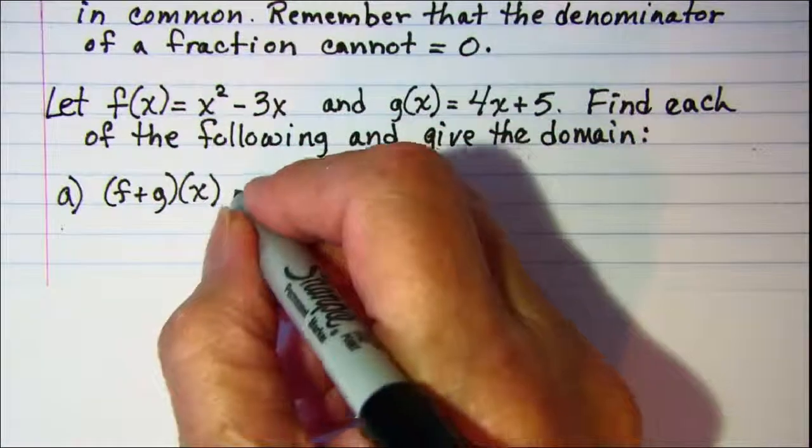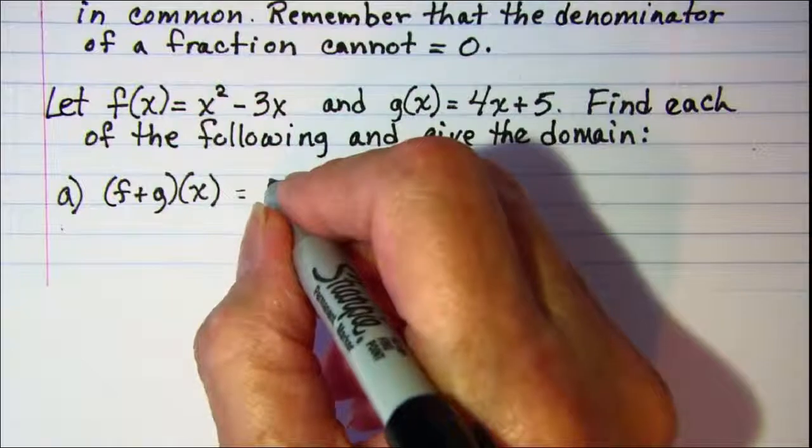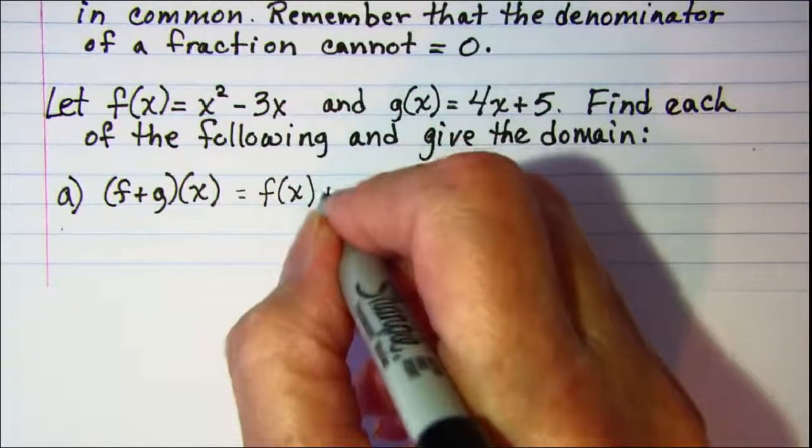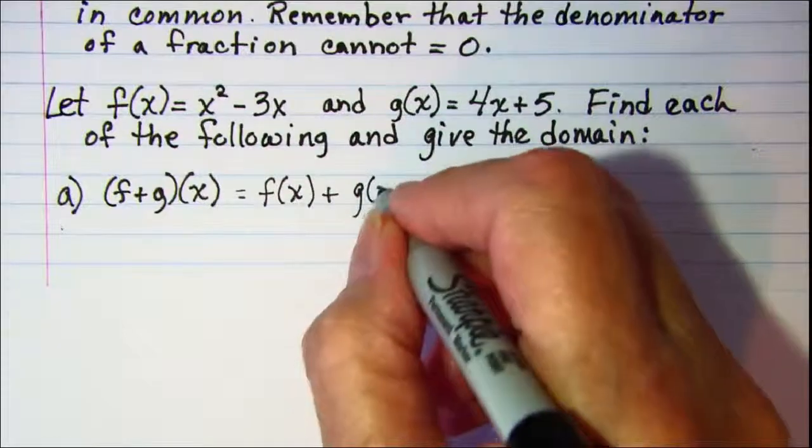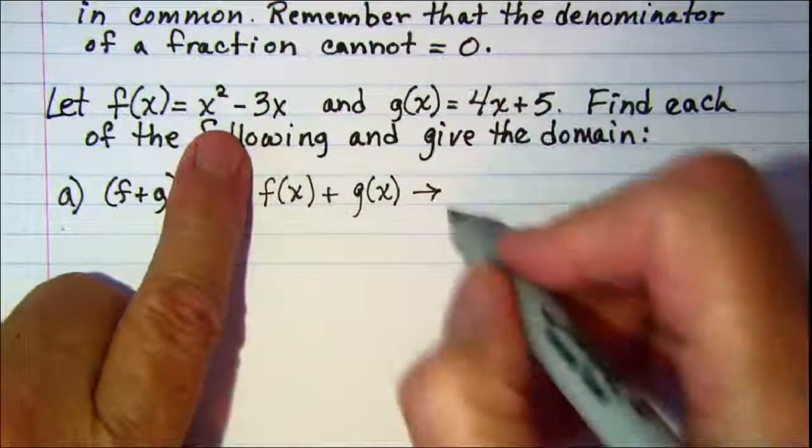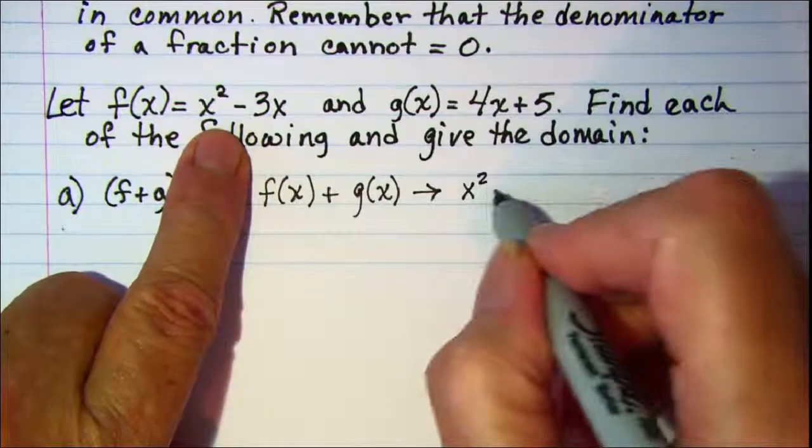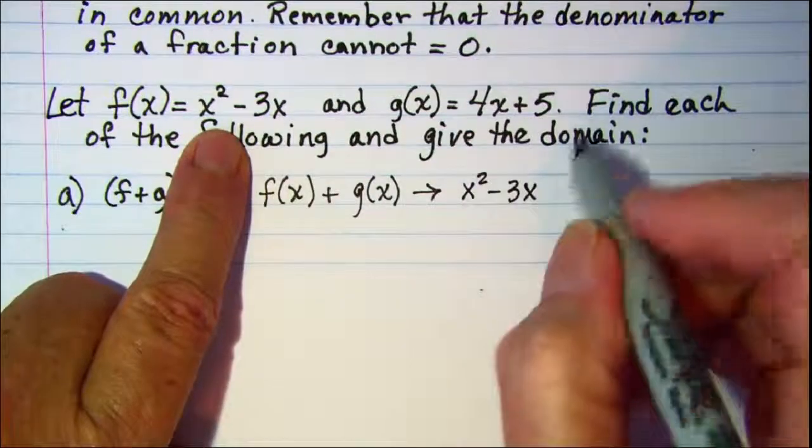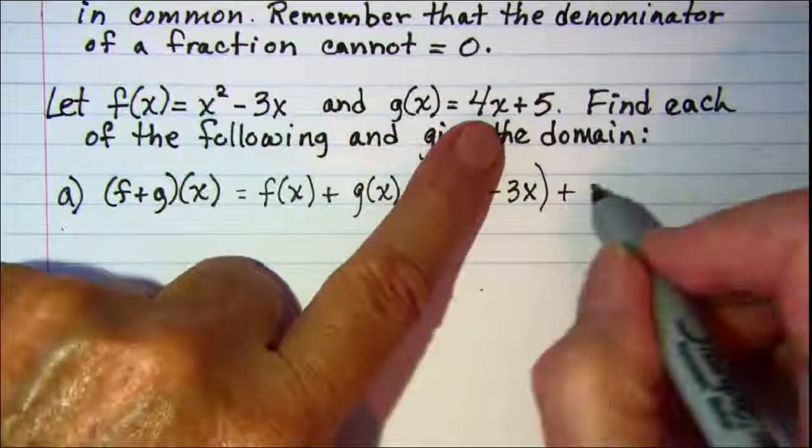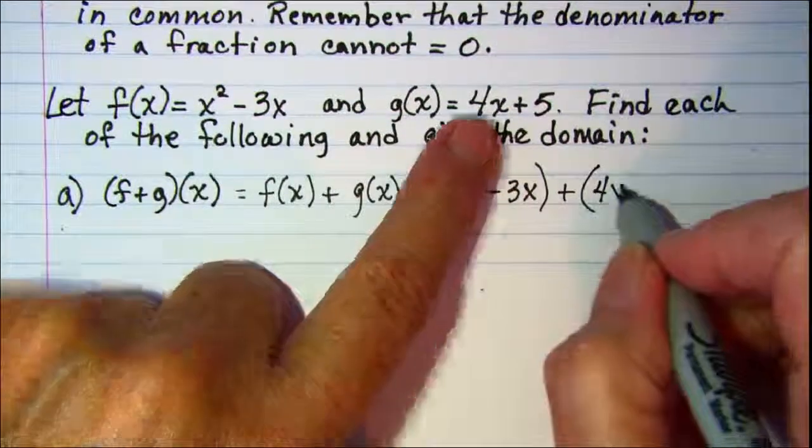What we'll do is just add f of x and g of x, and so that will be x squared minus 3x added to 4x plus 5.